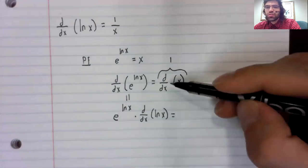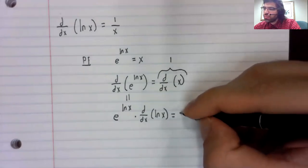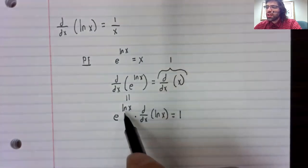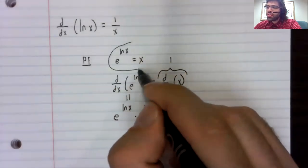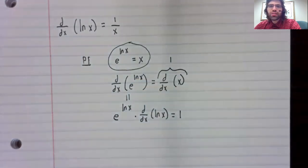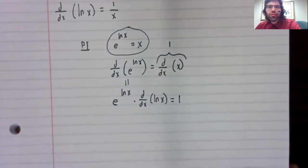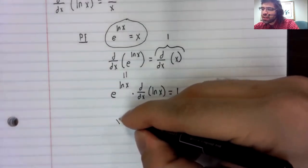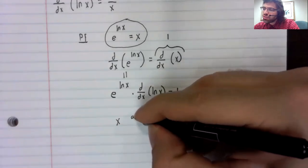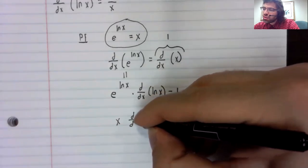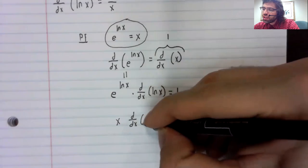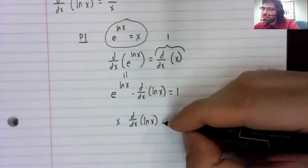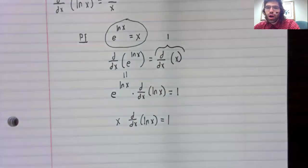And this is equal to one. e to the natural log of x is x. We used that fact before. Now we're using it again. So x times the derivative of the natural logarithm equals one.